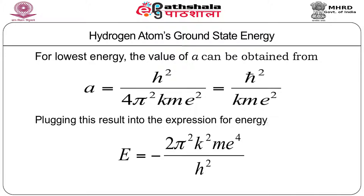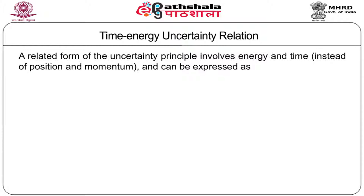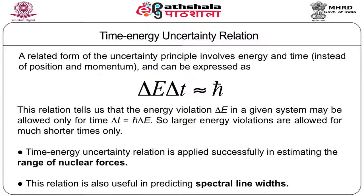A related form of the uncertainty principle involves energy and time instead of position and momentum: ΔE · ΔT ~ ℏ. This relation tells us that an energy violation ΔE in a system may be allowed only for a time ΔT = ℏ/ΔE — larger energy violations are allowed for much shorter times only. The time-energy uncertainty relation is successfully applied in estimating the range of nuclear forces and in predicting spectral line widths.